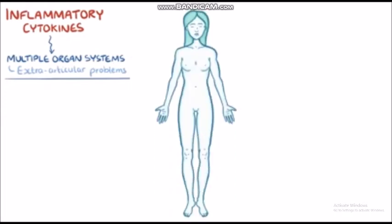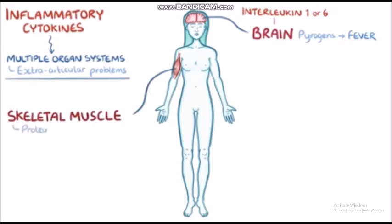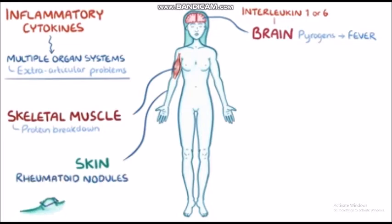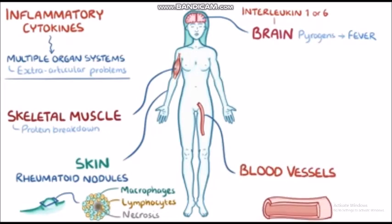For example, interleukin-1 or -6 travel to the brain where they act as pyrogens, inducing fever. In skeletal muscle, they promote protein breakdown, and in the skin as well as many visceral organs, they lead to the formation of rheumatoid nodules — round-shaped collections of macrophages and lymphocytes with a central area of necrosis, or tissue death. Blood vessels can also be affected: their walls get inflamed, resulting in various forms of vasculitis, and make them prone to developing atheromatous, or fibrofatty, plaques.